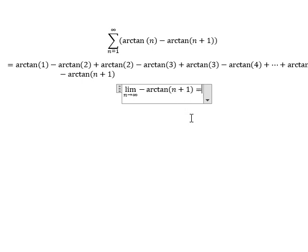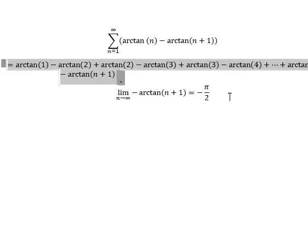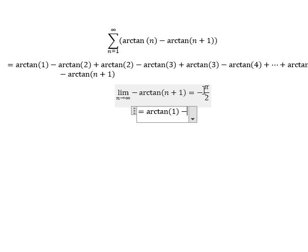For this one, we can simplify like this. We know that we still have arctan of 1, and that is about π over 4.